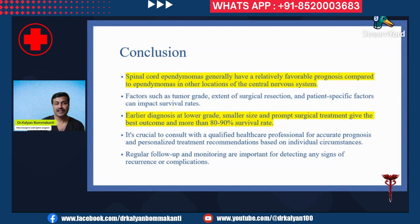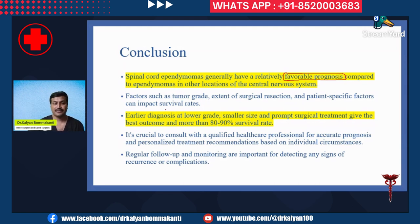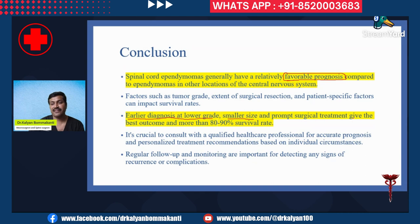In conclusion, spinal cord ependymomas generally have a relatively favorable outcome compared to other spinal cord tumors like astrocytomas. Factors such as tumor grade, extent of surgical resection, and patient-specific factors can impact survival rates. Earlier diagnosis at a lower grade, a smaller size, and prompt surgical treatment to achieve safe maximal excision give the best outcome and more than 80 to 90 percent survival rate.